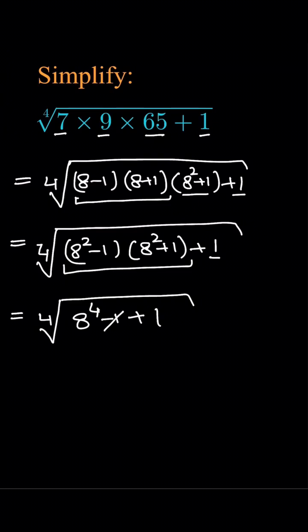The minus 1 cancels with the plus 1, leaving 8 raised to the power 4 under the 4th root. The 4th root cancels with the power 4, and we are only left with 8, which is the answer. Thanks.